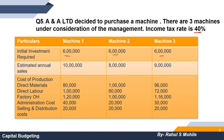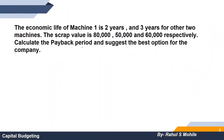Estimated annual sales are 10 lakhs for Machine 1, 8 lakhs for Machine 2, and 9 lakhs for Machine 3. The cost of production includes different expenses: direct materials, direct labor, factory overheads, administration cost, and selling expenses — all given separately for each machine. The economic life of Machine 1 is 2 years and for the other two it is 3 years.